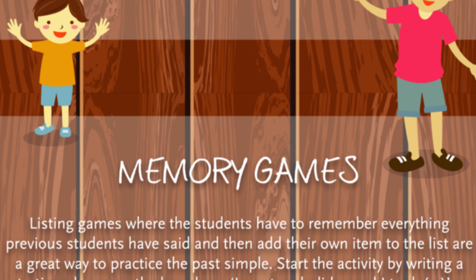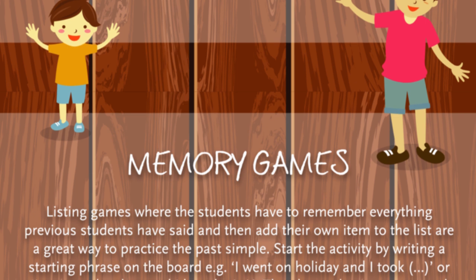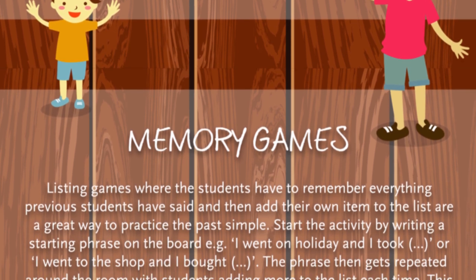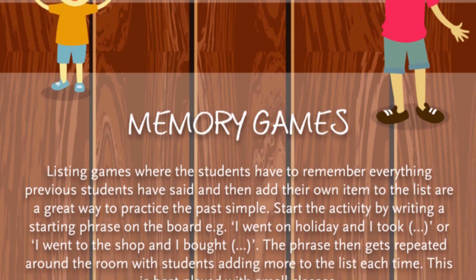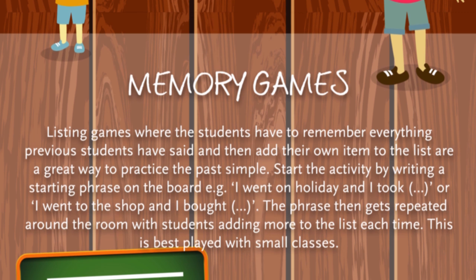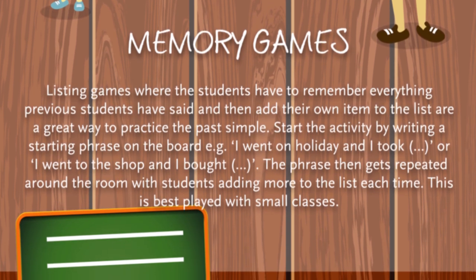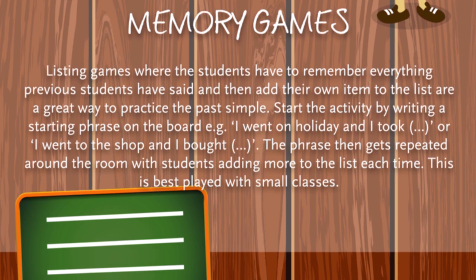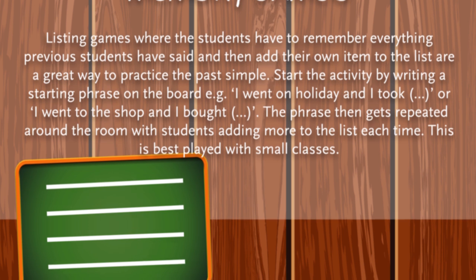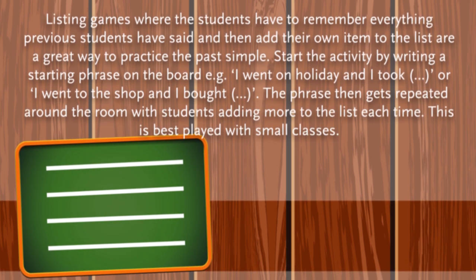Memory Games. Listening games where the students have to remember everything previous students have said and then add their own item to the list are a great way to practice the past simple. Start the activity by writing a starting phrase on the board, for example: 'I went on holiday and I took…' or 'I went to the shop and I bought…' The phrase then gets repeated around the room with students adding more to the list each time. This is best played with small classes.